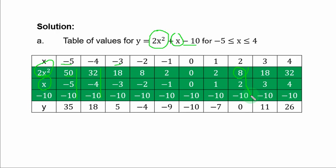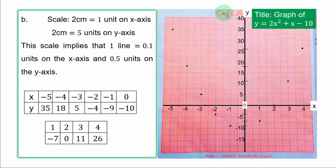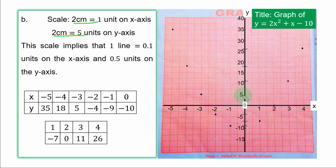For Part B, plotting the graph: on the y-axis, 2 cm to 5 units means each box (1 cm) is 2.5 units — two lines equal 1 unit. On the x-axis, 2 cm to 1 unit. Starting from 0.5 and plotting each point. After plotting all points, join them to form the parabolic curve and add the title y = 2x² + x - 10.